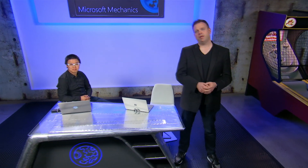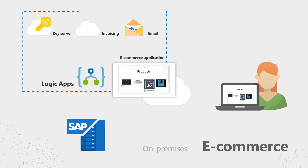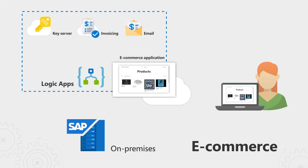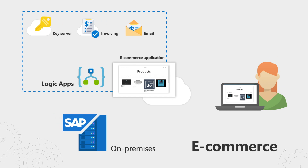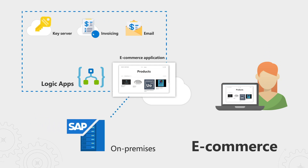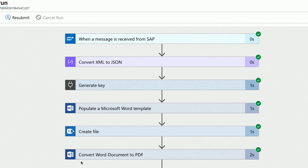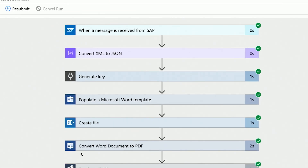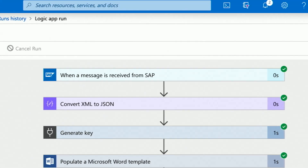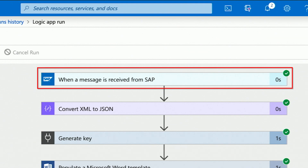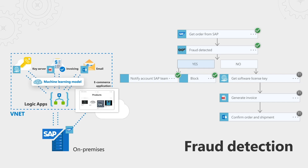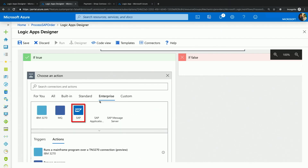Coming up, if you're in the middle of your cloud migration, dealing with legacy systems, or just want better integration between Microsoft, third-party, and on-premises systems and services, we're going to take a look at how Logic Apps can help, including the latest updates such as our new SAP connector with bidirectional connectivity and the new integration service environment for direct secure access to your virtual network resources.